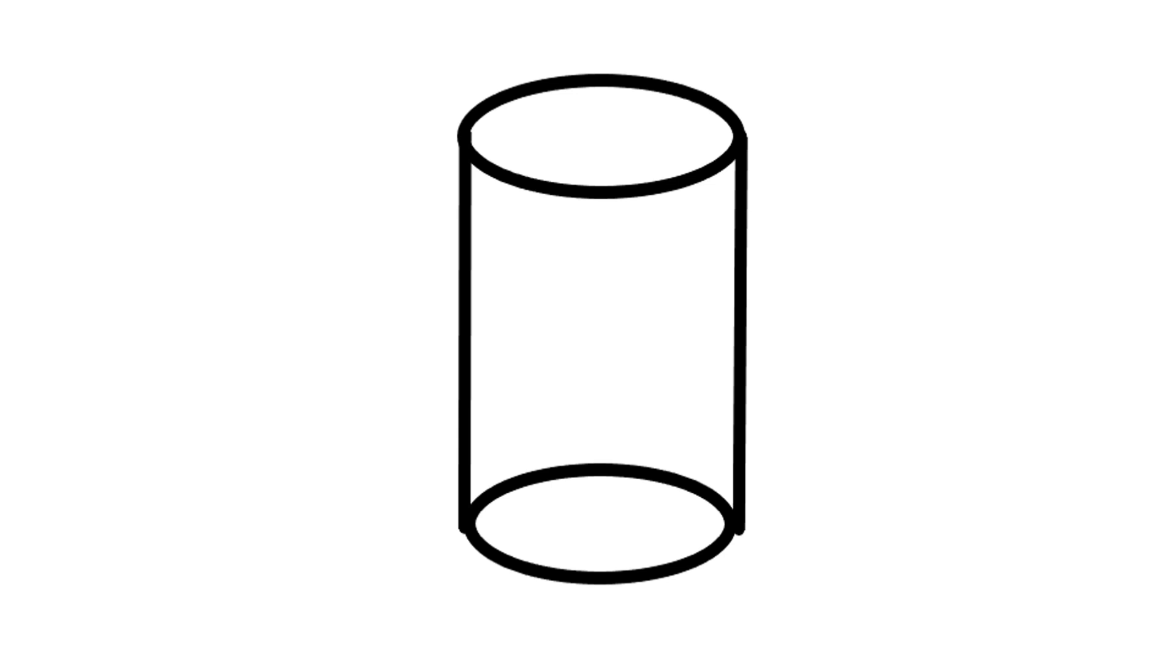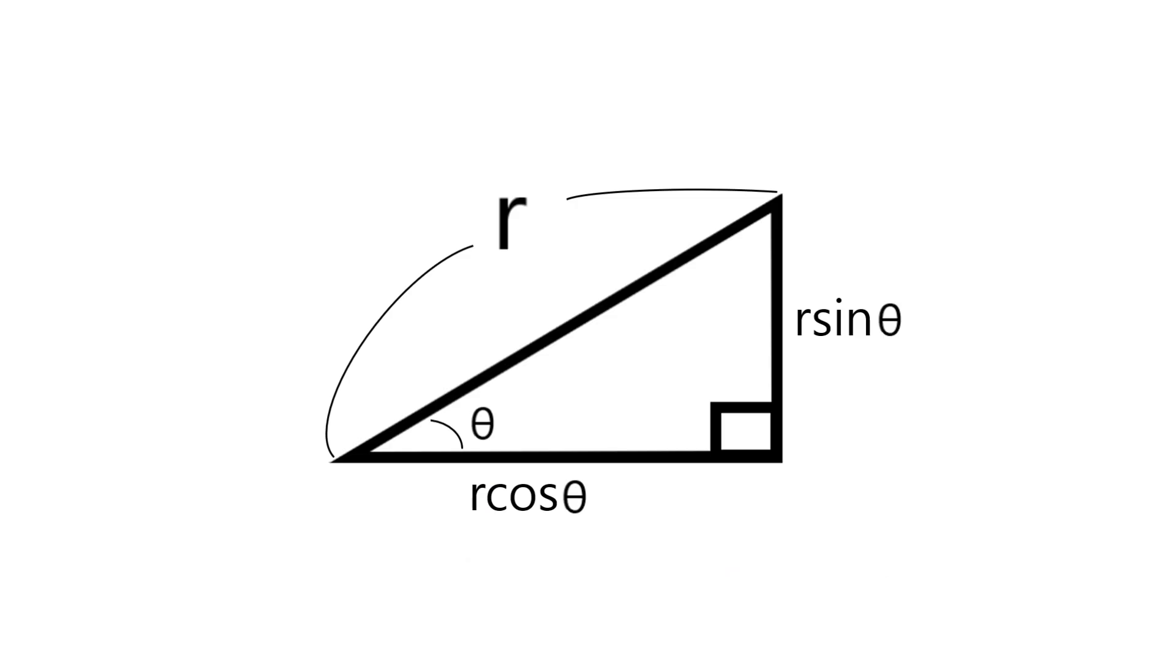Actually, we could realize that the square of R is the square of radius of circle on xy plane. As you could see now. With this triangle.